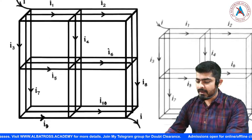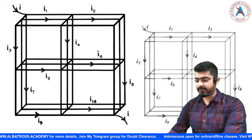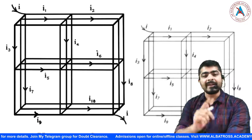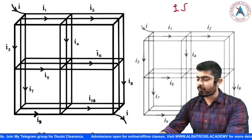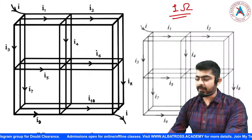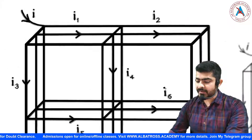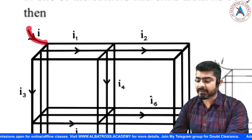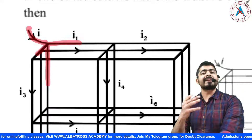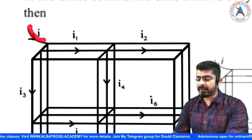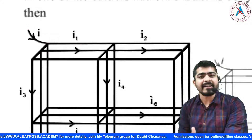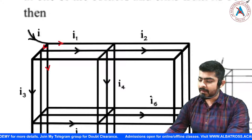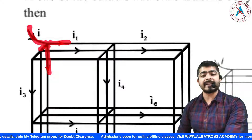To solve this, I will assume that each segment has a resistance of 1 ohm. Now let's analyze the circuit. At the entry corner, current I encounters three identical paths. Because all three paths are identical, the current splits equally — each path carries I/3.